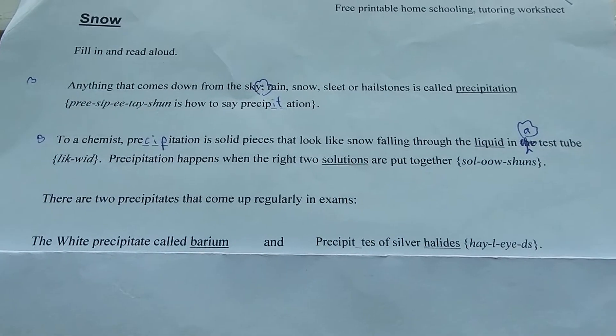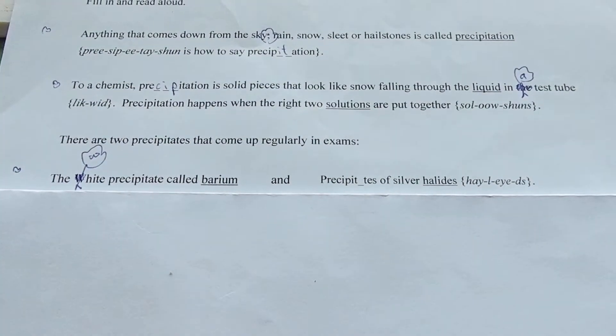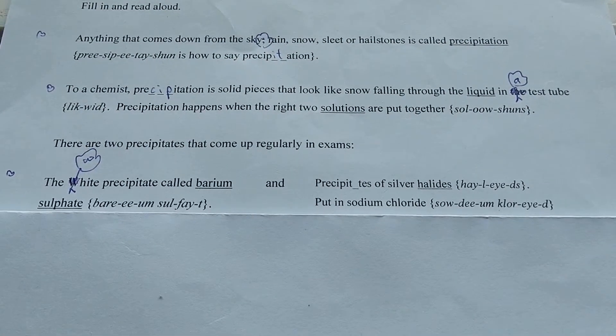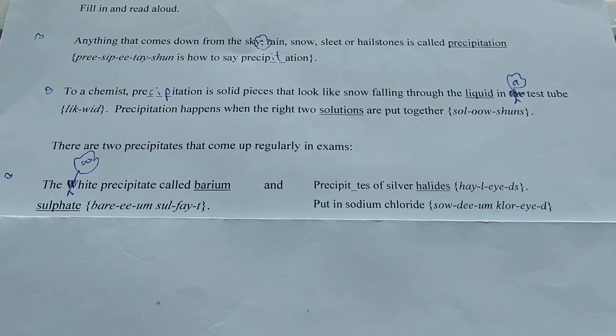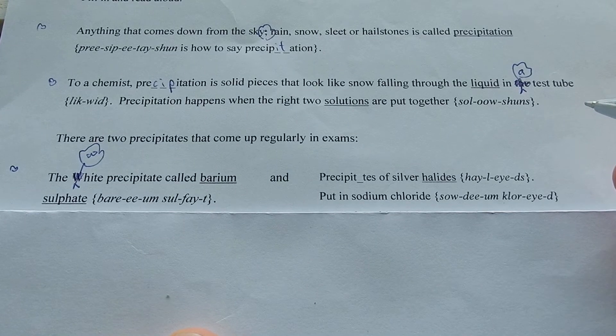There are two precipitates that come up regularly in exams. The white precipitate—it doesn't need a capital W, really, does it? That's just silly. The white precipitate called barium sulfate, and precipitates of silver hydrohalides.